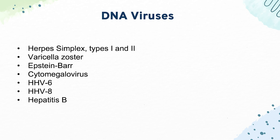Next, we have varicella zoster, which causes chickenpox and shingles. Next, we have Epstein-Barr virus, which causes mononucleosis and infects B cells through the CD21 receptor — that's very high yield. Then we have cytomegalovirus, also called CMV, which also causes mononucleosis. A high-yield point is that unlike Epstein-Barr, it will cause a negative monospot test.